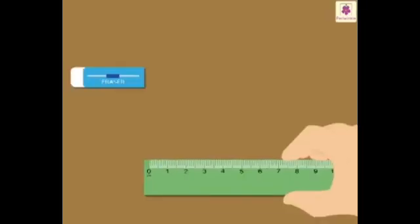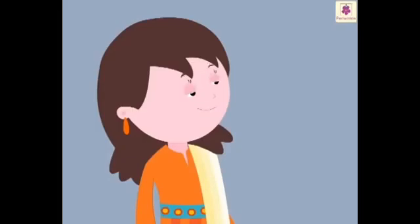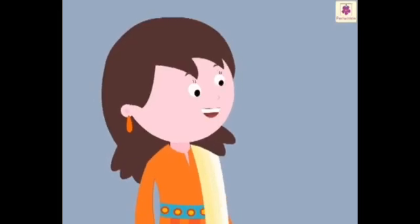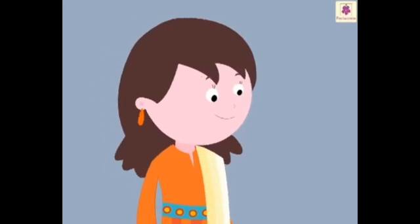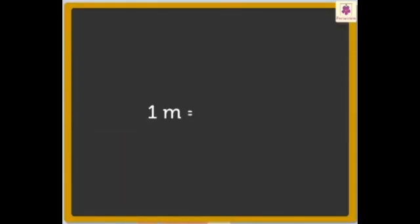Correct. Now let us measure this eraser. I think it is 4 centimetres. Correct. So now you know how to measure the length of small objects. But longer objects cannot be measured with this small ruler. They are measured in a bigger unit called metre. Metre is written in short as M. One metre is equal to 100 centimetres.